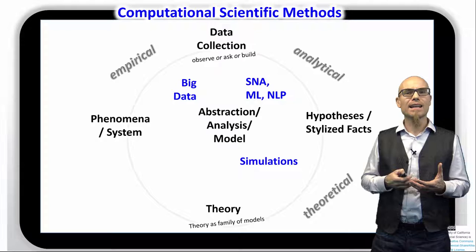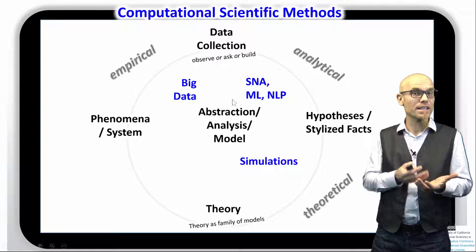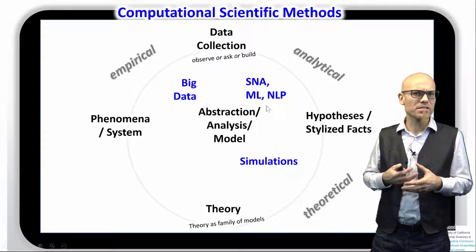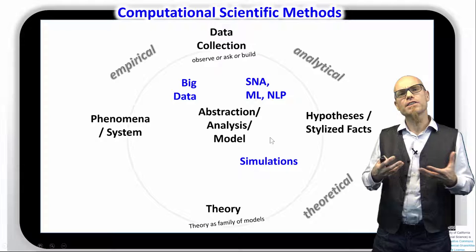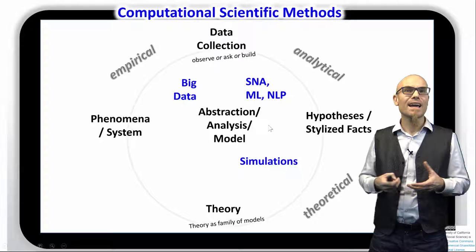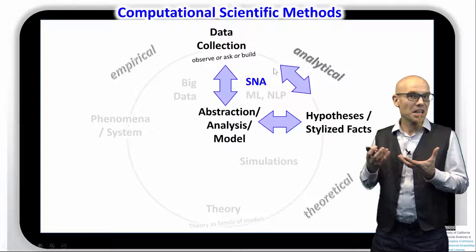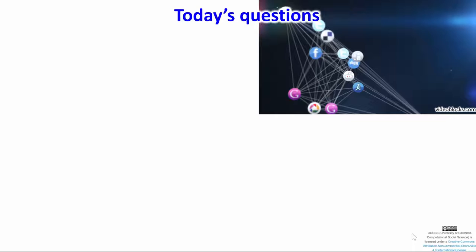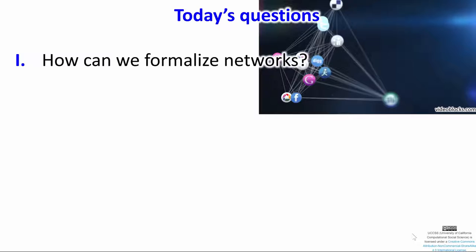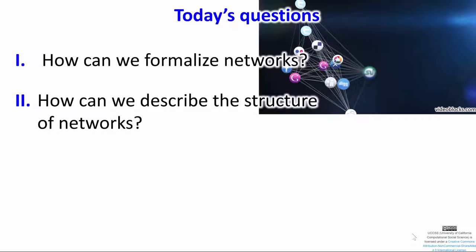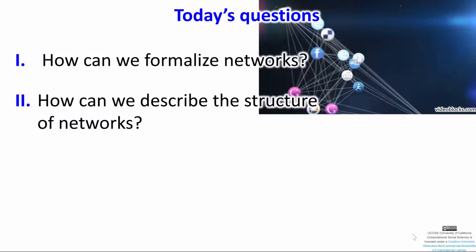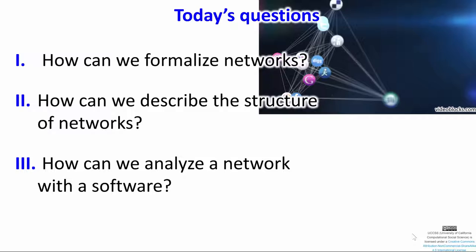We can approach social network analysis from both directions — from empirical data or from theory, creating networks that don't necessarily exist in reality to explore theoretical possibilities. Today we focus on how data is transformed and analyzed in network form. We'll answer three questions: first, how can we formalize networks; second, how can we describe network structure; and third, a hands-on lab with software.